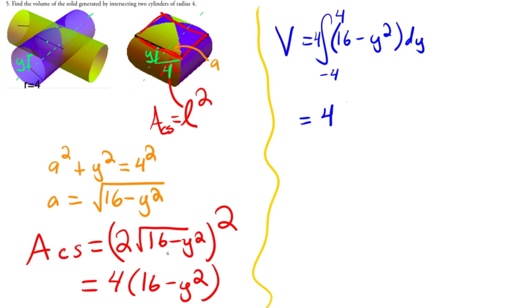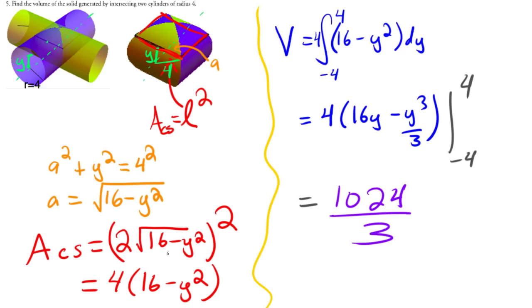And so this is equal to 4, 16y minus y cubed over 3, evaluated from negative 4 to 4. And when all is said and done, you end up with 1,024 over 3.